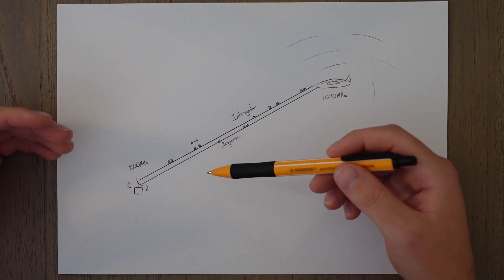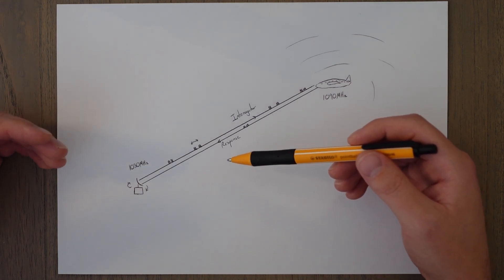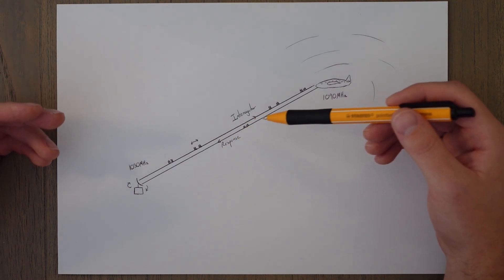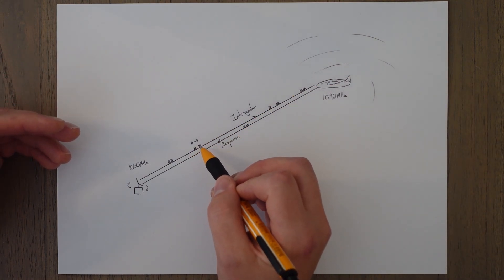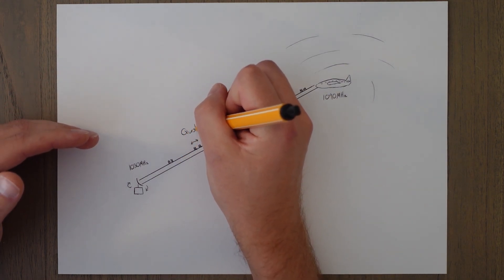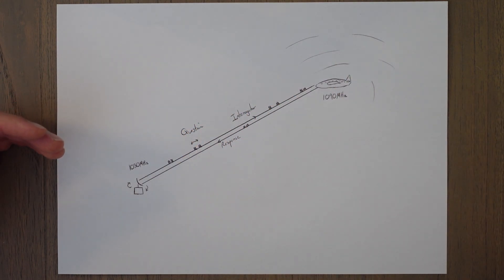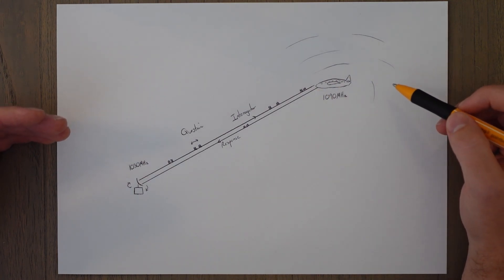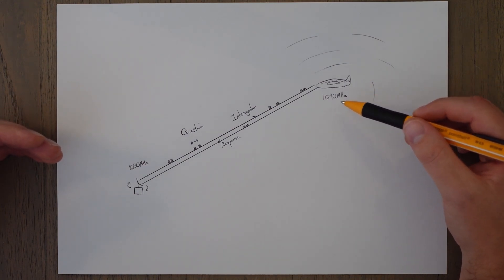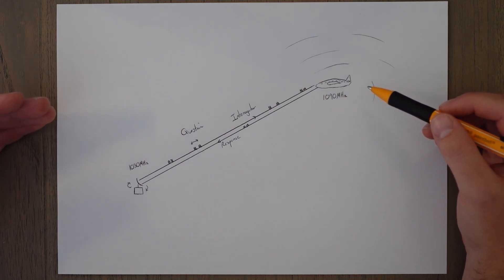The ground station will send out an interrogation signal using pulses at 1030 megahertz. The spacing of these pulses determines the information sent back to the transponder. The spaces of these pulses is almost like a little question. The response from the transponder in the aircraft is sent back on a different frequency to prevent interference, and that is on 1090 megahertz.